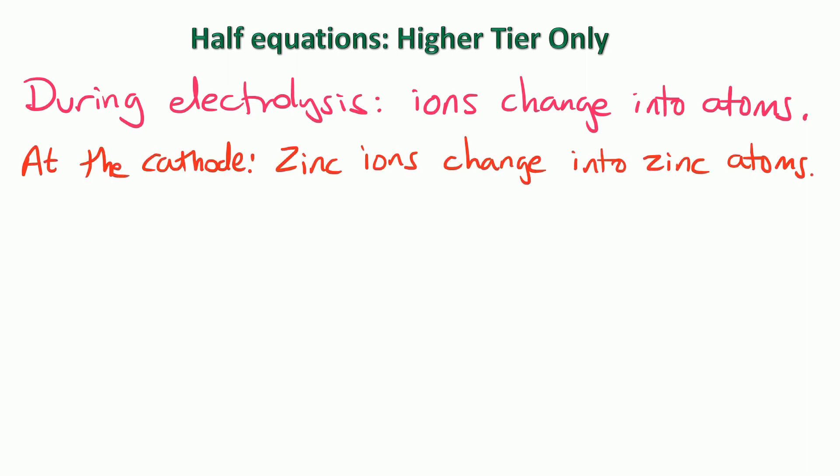At the cathode we saw zinc ions changing into zinc atoms. So we've got zinc ions on the left and zinc atoms on the right. Now because it's a 2+ we know that two electrons are going to be involved somewhere. So do we put those two electrons on the left or do we put them on the right? Well the answer is we put them on the left because the charge on each side of the equation has to balance. So on the left we've got 2+ and 2- that equals zero charge and we've got zero charge on the right. So we've put it on the correct side. And there are rules you can follow so for example at the cathode they're always going to be gaining electrons like this.